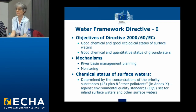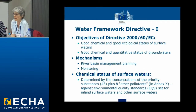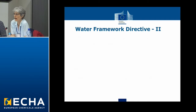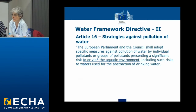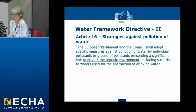The chemical status of surface waters is determined by the concentrations of the priority substances — there are 45 of them now — plus eight other pollutants, in Annex 10 of the Water Framework Directive. That concentration is compared with environmental quality standards, which are set for inland surface waters and other surface waters — that's transitional and coastal waters. Article 16 is the critical part of the Water Framework Directive, and it says that the European Parliament and the Council shall adopt specific measures against the pollution of water by individual pollutants or groups of pollutants presenting a significant risk to or via the aquatic environment, including such risks to waters used for the abstraction of drinking water. So it is the aquatic environment, but also human health, that matter.